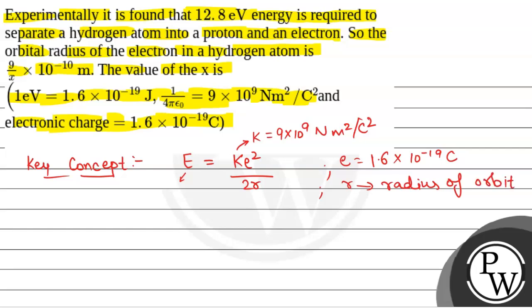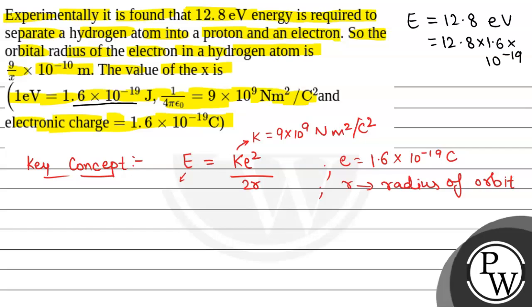We have been given binding energy equal to 12.8 electron volt, that is the energy required to separate a hydrogen atom into a proton and electron. This needs to be converted into joules. Since 1 electron volt equals 1.6 into 10 to the power minus 19 joule, 12.8 electron volt equals 12.8 into 1.6 into 10 to the power minus 19 joules. This will be the value of the binding energy.